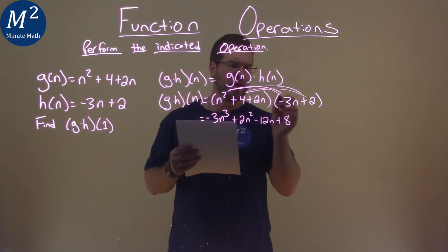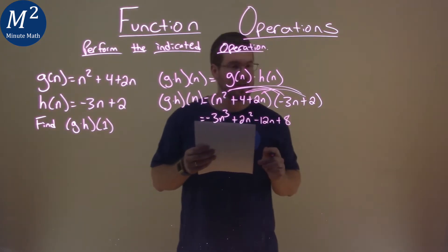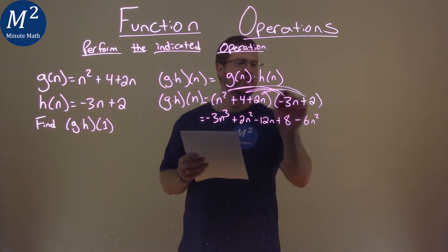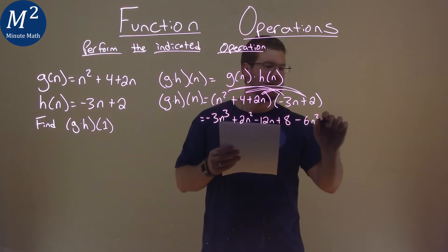That's positive. Then we have 2n times negative 3n and that's negative 6n squared and 2n times 2 is 4n.